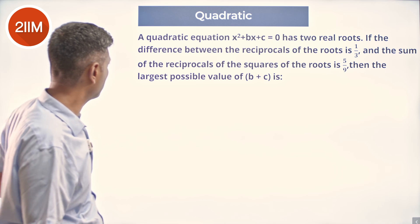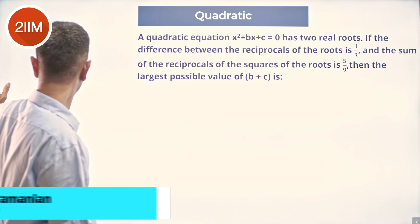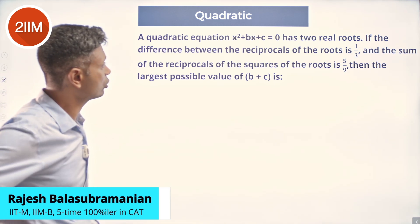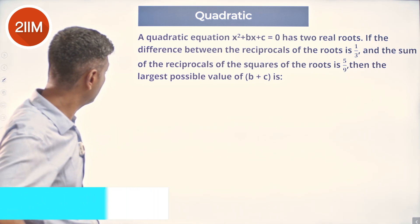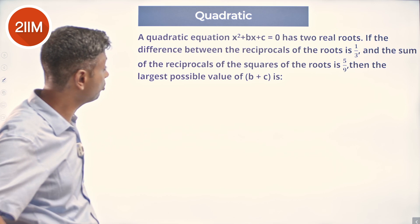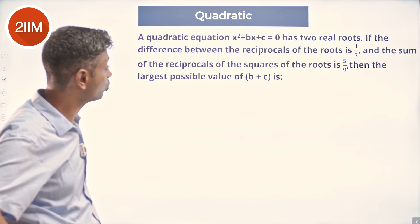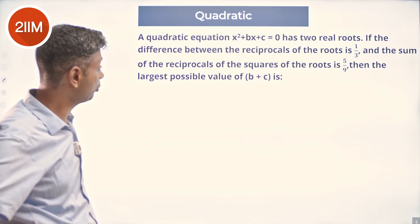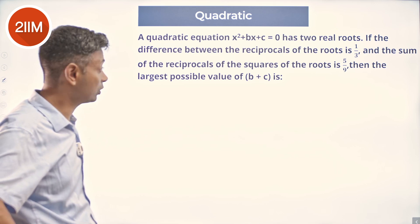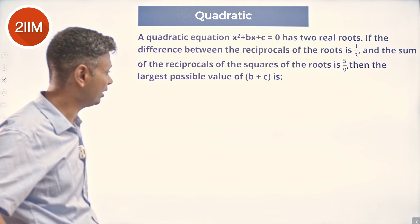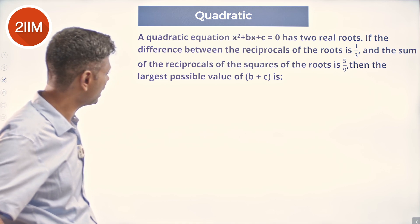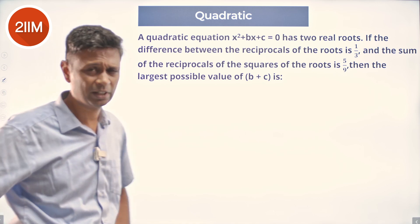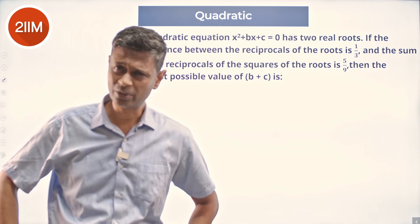A quadratic equation x² + bx + c = 0 has two real roots. The difference between the reciprocals of the roots is 1/3, and the sum of the reciprocals of the squares of the roots is 5/9. Find the largest possible value of b + c — an incredibly complicated question.